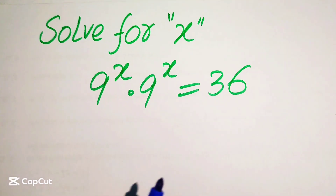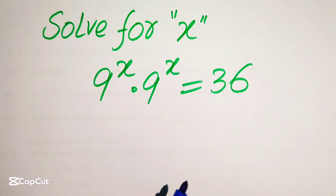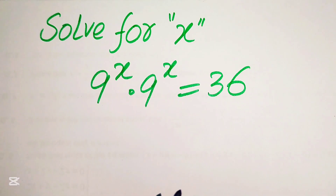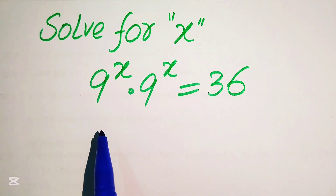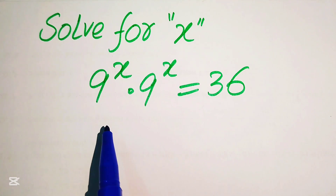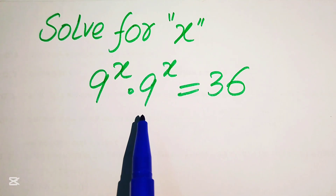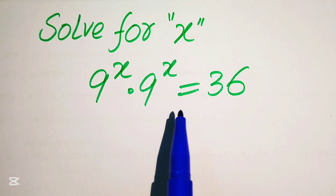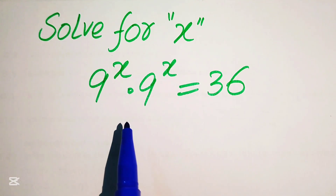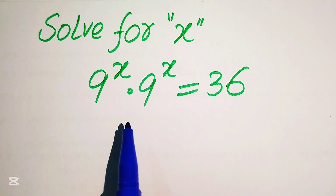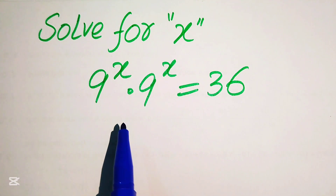Hello everyone, welcome to solve this nice math pre-algebra problem. Here we have 9 to the power of x multiplied by 9 to the power of x equals 36, and we solve this problem for the values of x.